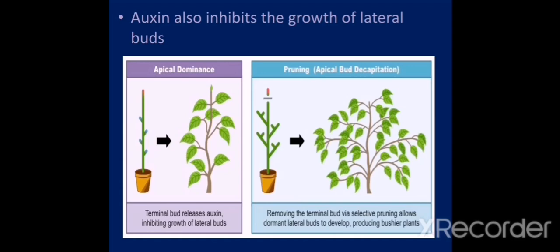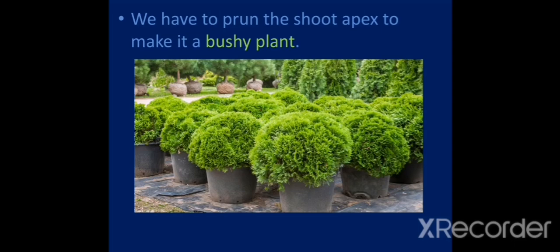Auxin has another function on plants. Auxin inhibits the growth of lateral buds. In the first diagram, you can see lateral buds are not growing as the apical bud is growing well. This process is called apical dominance. In the second diagram, the apical bud has been pruned, has been cut off. So you can see what happens. All lateral buds are growing nicely. So the plant has become a bush. We have to prune the shoot apex to make it a bushy plant. If we cut off the shoot apex, the plant will become a bush like this. We can obtain bushy plants like this.